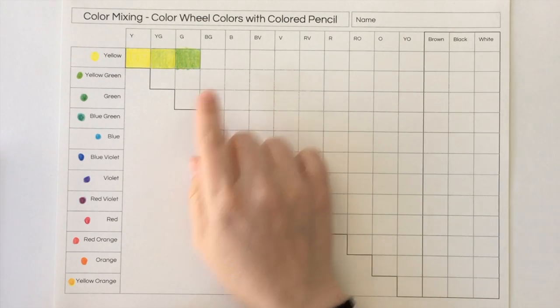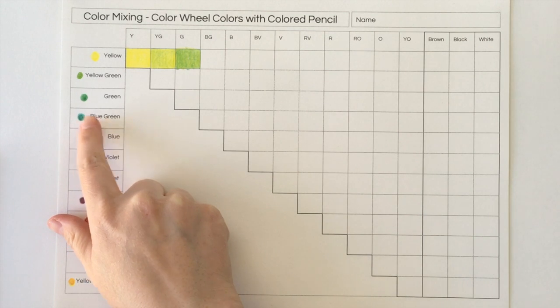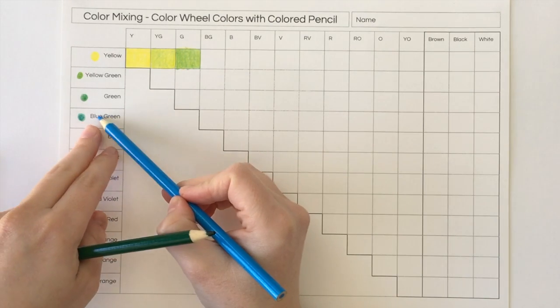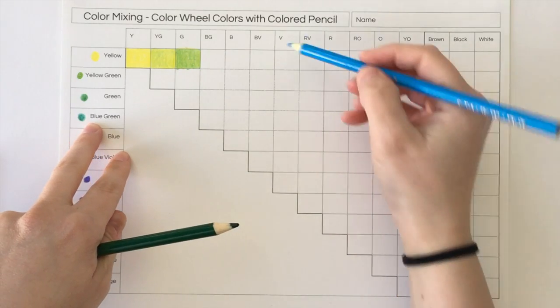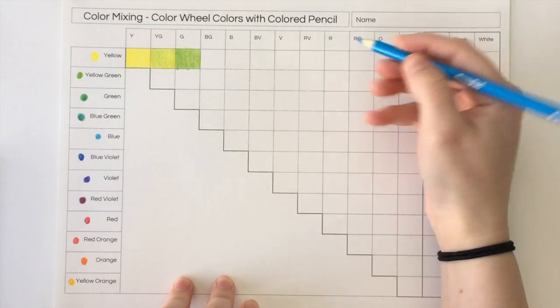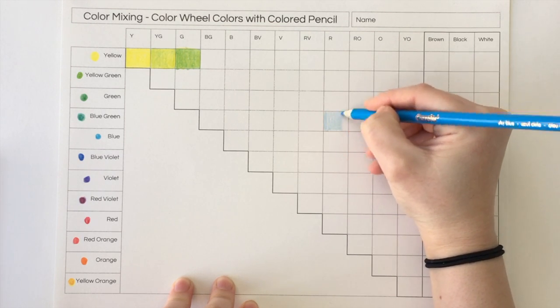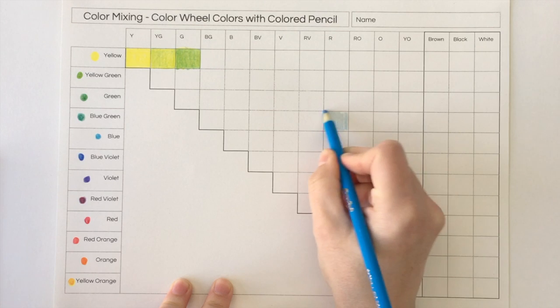All right, so to mix one of the boxes with one of the colors that I had to make myself with two different colors, I would start out. So let's say I'm going to do blue-green and red. So I'm going to first make the blue-green the way I want it.